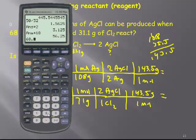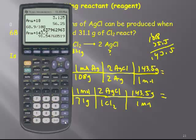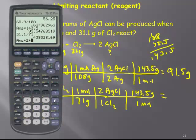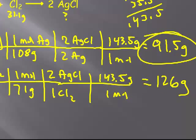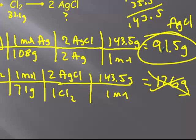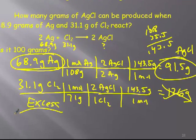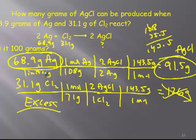So 68.9 divided by 108 times 2 divided by 2, times 143.5. And I get 91.5 as my answer for grams of the first one. So from the silver I can get 91.5. From the chlorine, 31.1 divided by 71 times 2 times 143.5, I can get 126 grams. So the correct answer is it's going to be 91.5 grams of AgCl that is produced. You can't possibly make 126 because once you get to 91.5, all of the silver is gone. Now I picked these numbers this time to show you that even though there was less grams of chlorine, it ended up being the excess reactant. So this one is called the limiting reactant. That's the excess reactant. And the limiting reactant runs out at 91.5 grams of silver chloride.